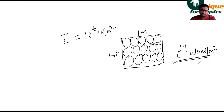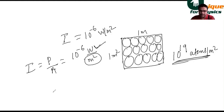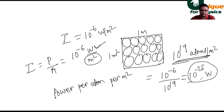We know intensity equals power per area. With an intensity of 10⁻⁶ watt per meter square and an area of one meter square, the power is 10⁻⁶ watt. With 10¹⁹ atoms per meter square, the power per atom equals 10⁻⁶ divided by 10¹⁹, which gives 10⁻²⁵ watt. So 10⁻²⁵ watt is the power gained by one atom per meter square.